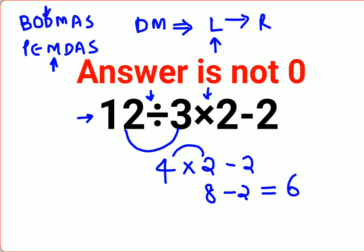Okay, so now you might be wondering when the answer will be 0. The answer will be 0 if the question was written in this format, meaning the importance or rather the precedence was given to multiplication by putting brackets on both sides.